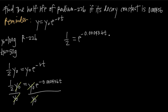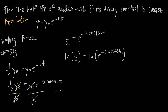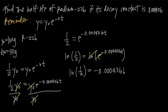In order to solve for t, we need to take the natural log of both sides. Taking the natural log of both sides gives us natural log of one-half on the left, and natural log of e to the negative 0.000436 times t on the right. The reason we take the natural log is because the natural log and e cancel each other out, leaving us with just the exponent. So we end up with natural log of one-half equals negative 0.000436 times t.